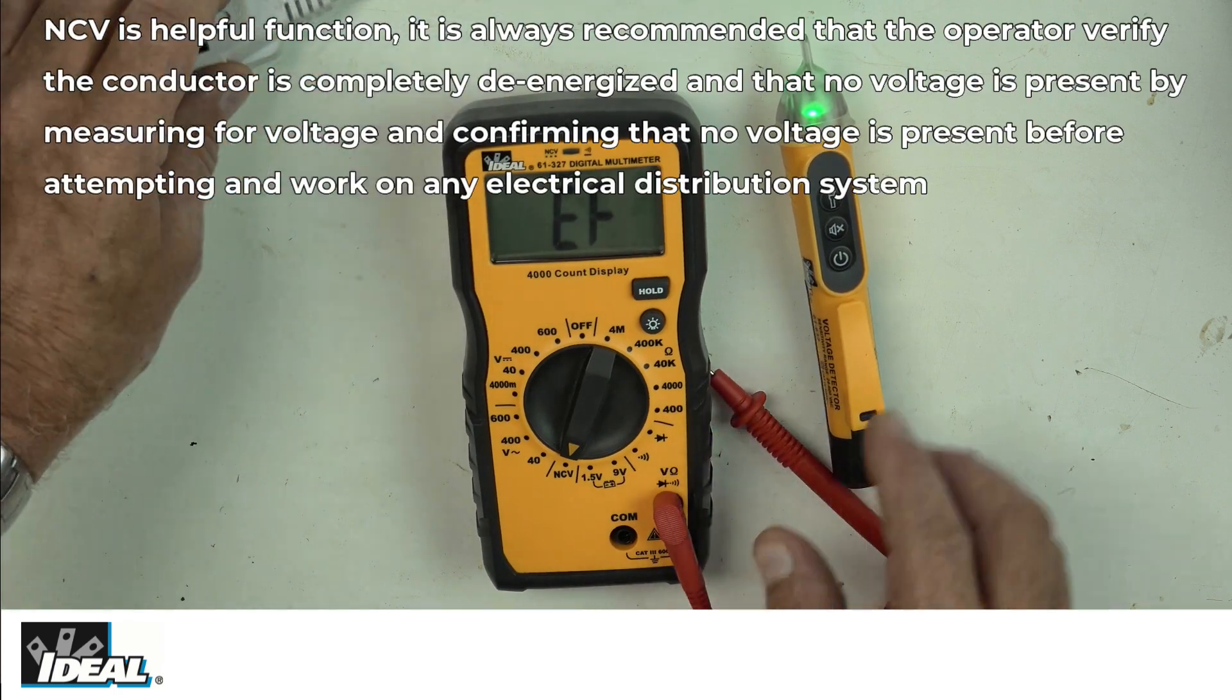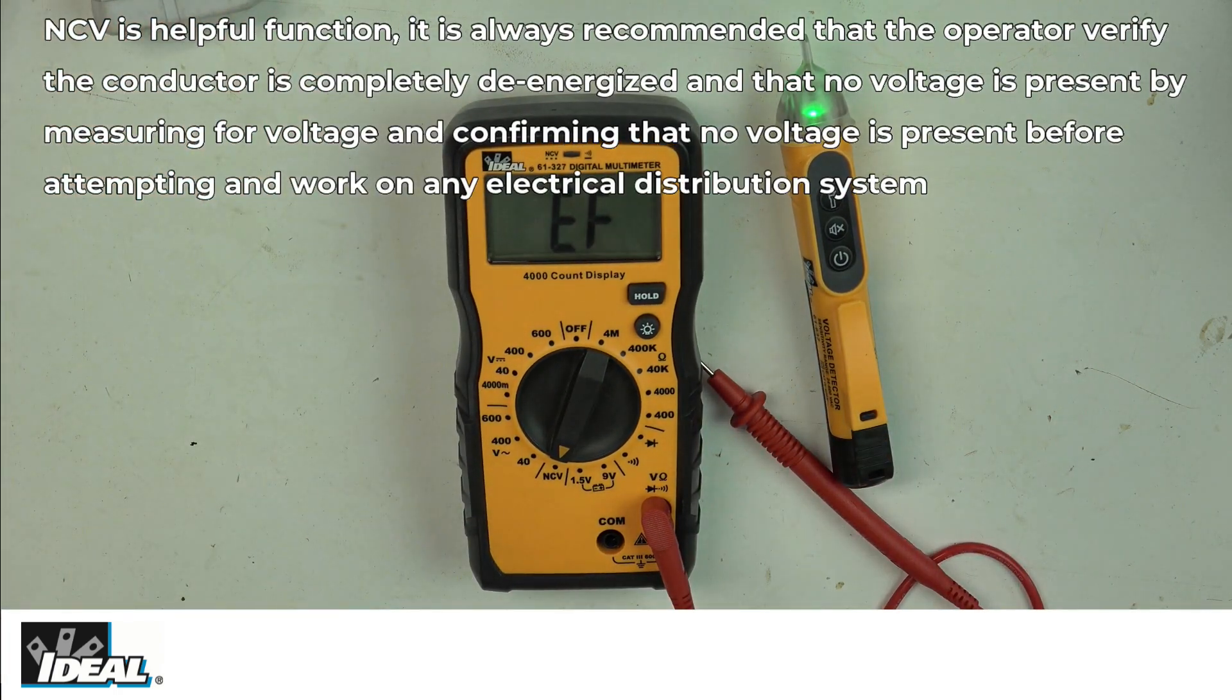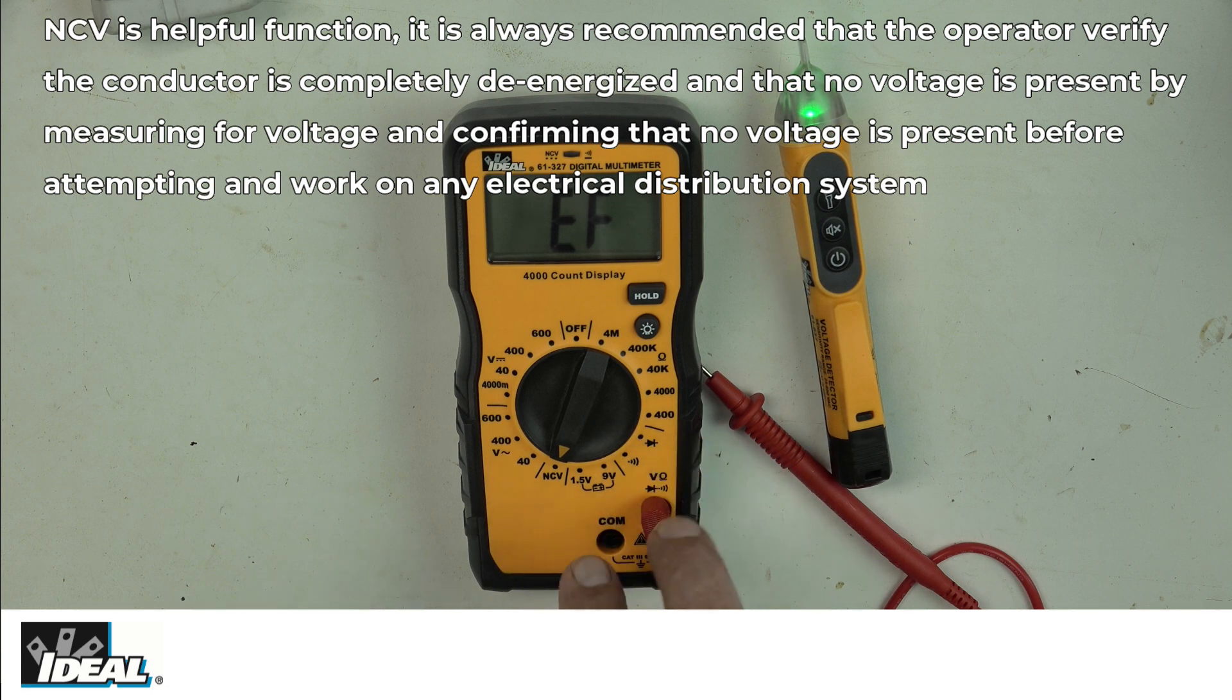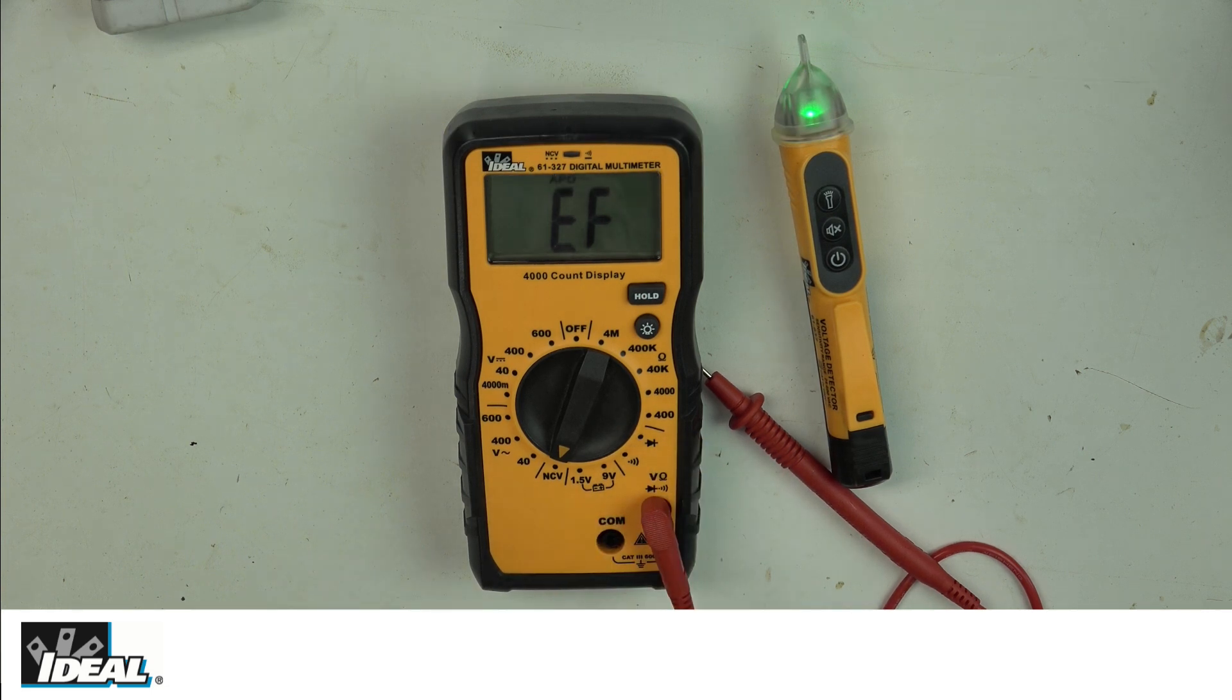I should point out, non-contact voltage sensing capabilities are always nice, but it's always important to make sure you verify the circuit is de-energized by actually using your tester to test for voltage using the leads. So there you go folks, that's the Ideal 61-327 manual ranging digital multimeter from Ideal.